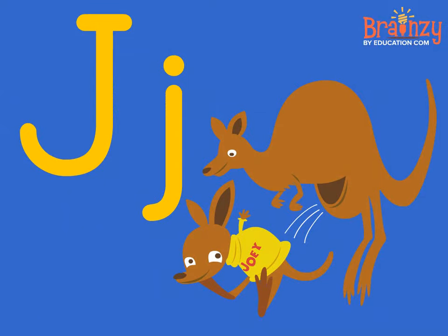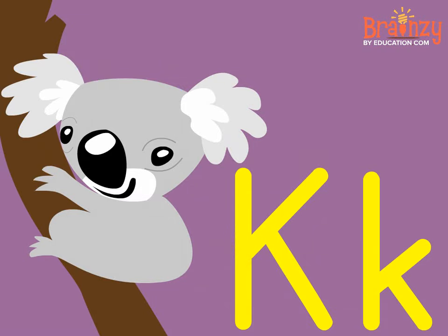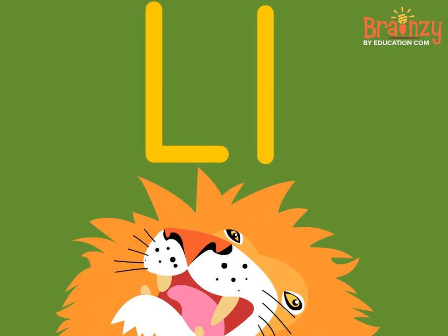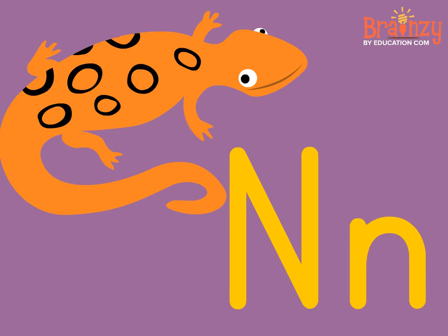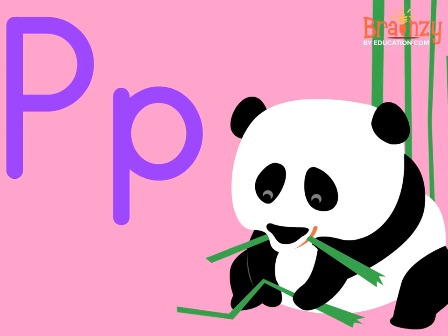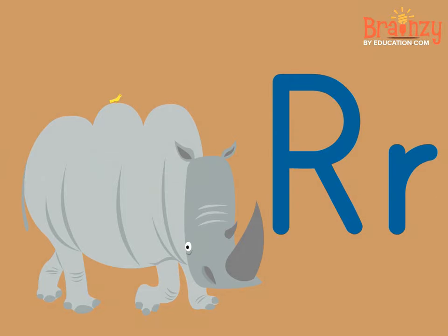Joey with a bounce, koala, lion, m says mouse. Over in the corner we've got a newt, otter, panda, quail, a rhino — that's cute.